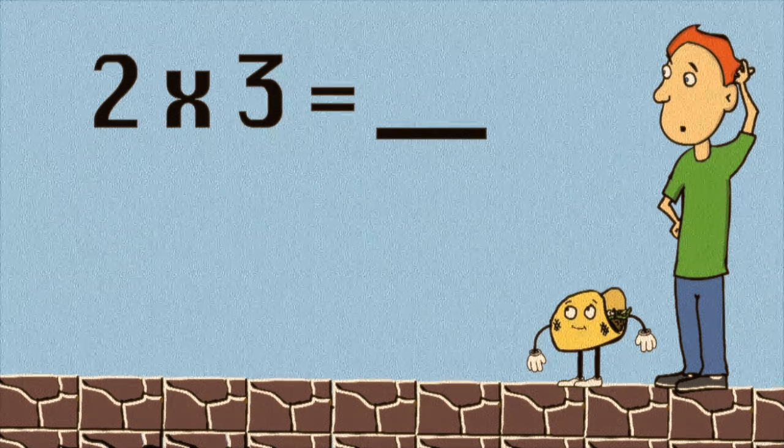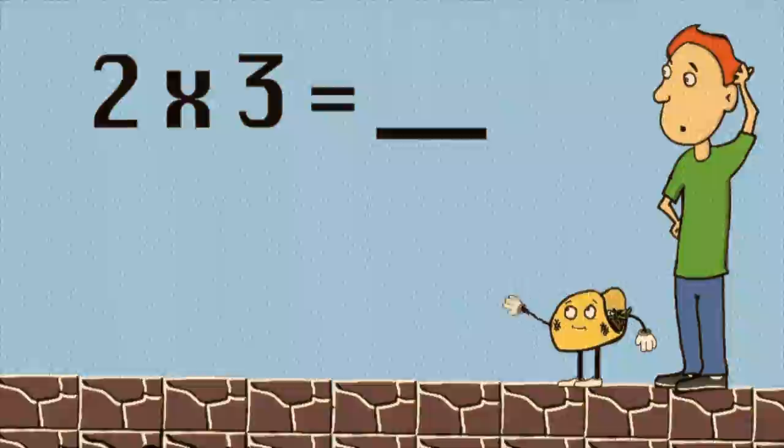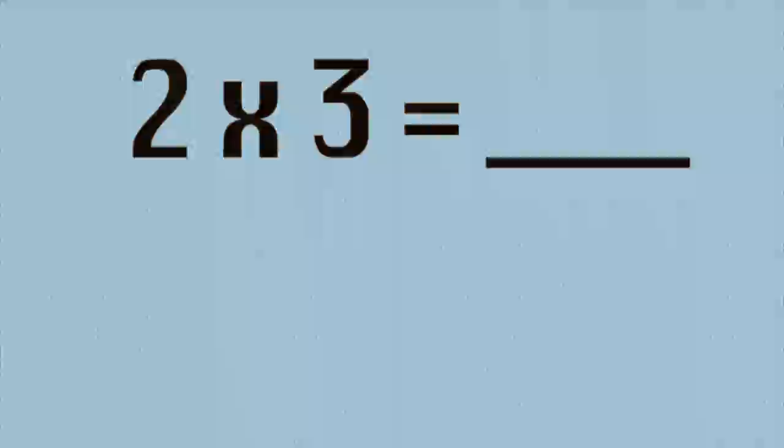Let's see what's really going on here. We see the multiplication problem 2 times 3. This means we have two groups of 3.